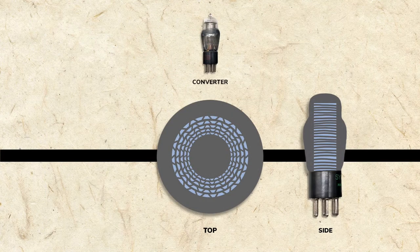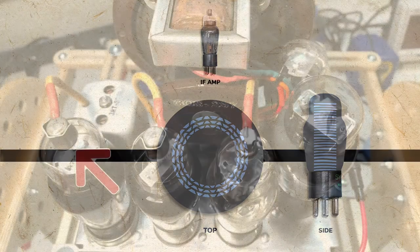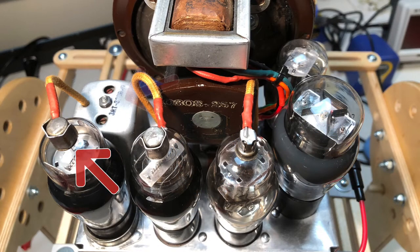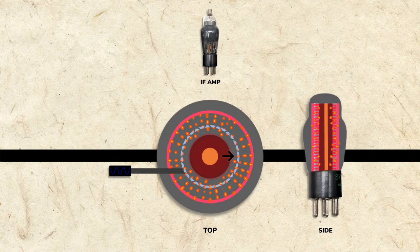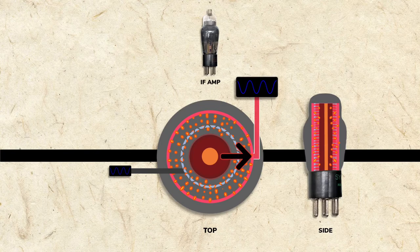So instead of 5 grids, it has just 3. The first grid is connected to the tube's grid cap, which gets its signal from the first IF transformer. As current passes from cathode to plate, the IF signal is amplified.